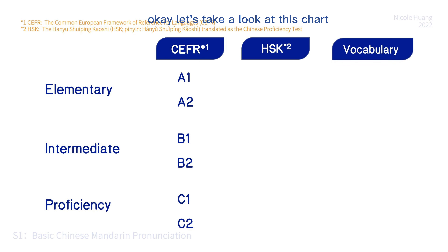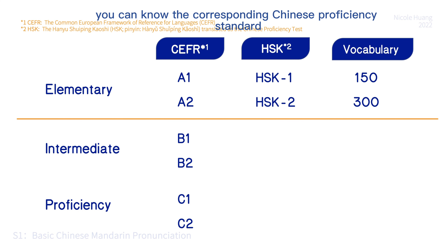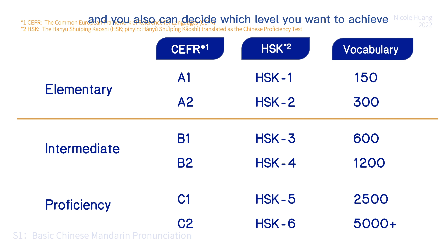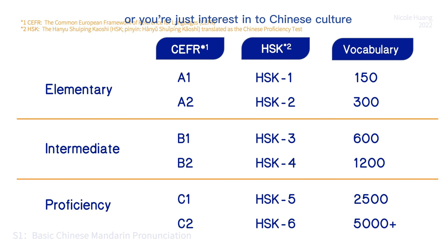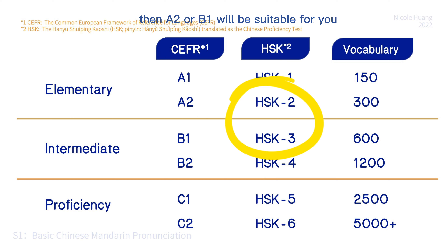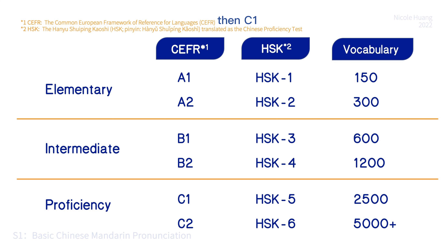Let's take a look at this chart — it might be helpful for you to set your study goals. According to the CEFR standard on the left, you can see the corresponding Chinese proficiency standard. You can decide which level you want to achieve. If you only want to have daily conversation with Chinese people, or you're just interested in Chinese culture and want to grab a new language, then A2 or B1 will be suitable for you. But if you want to do business with Chinese companies, then C1 or even C2 is the best choice.